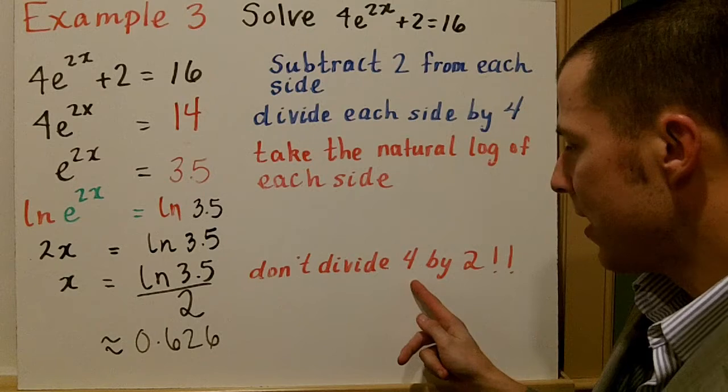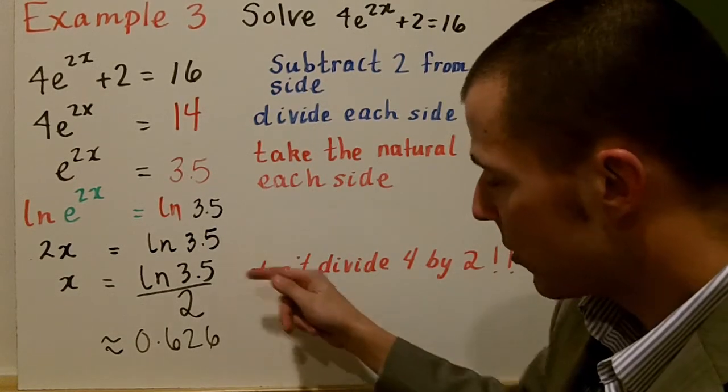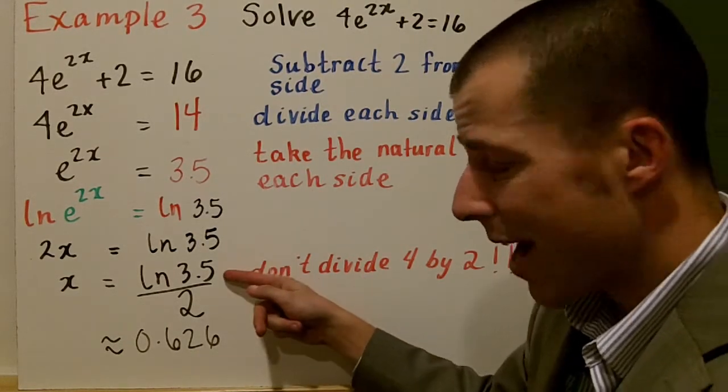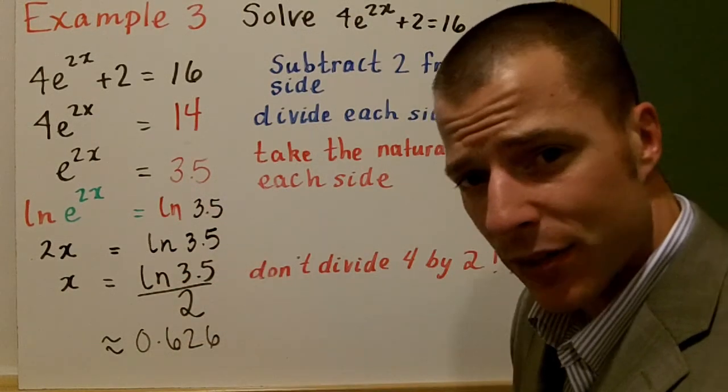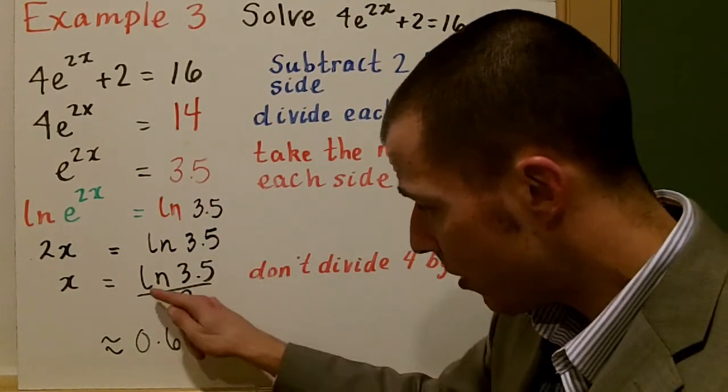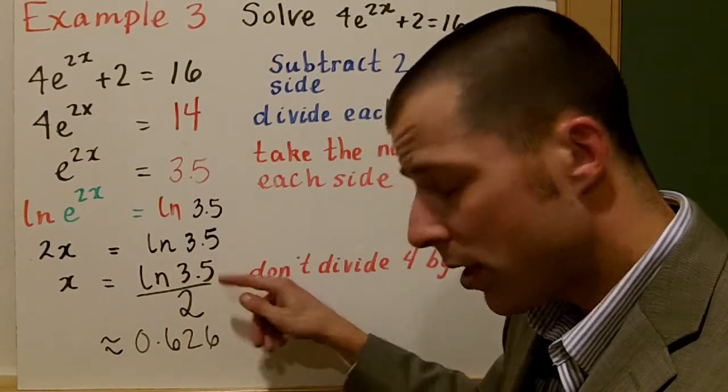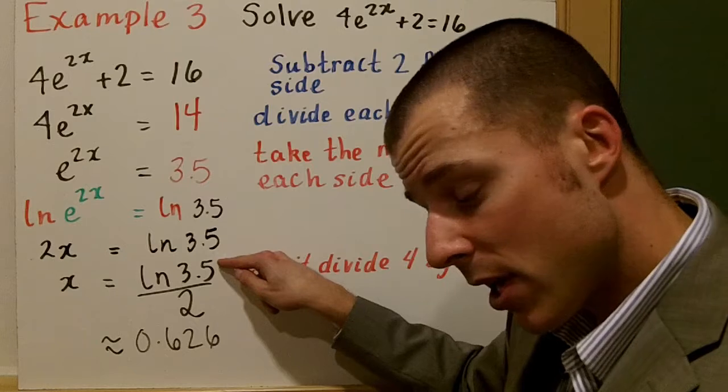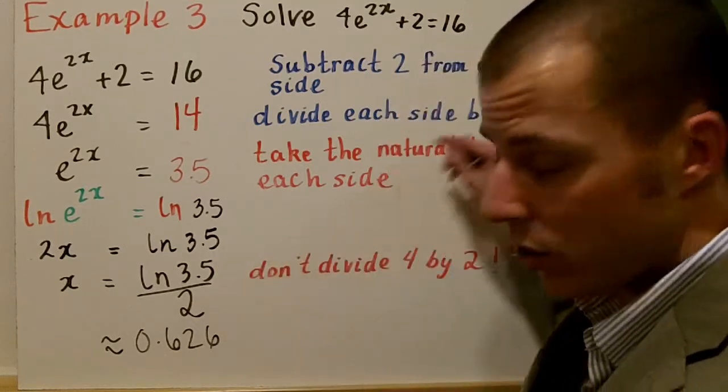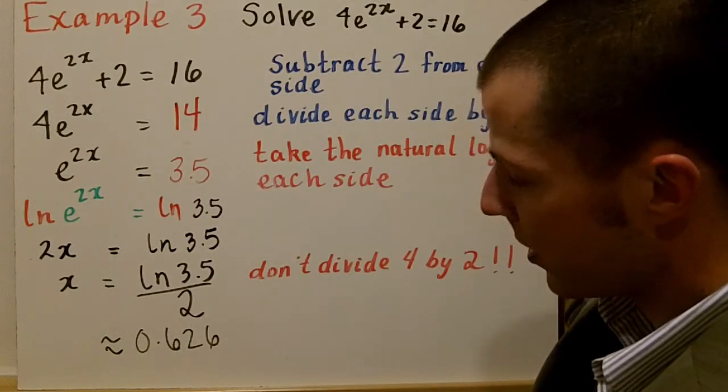Remember, don't divide 3.5 by 2, because this 2 is not with the natural log. It's not a single natural logarithm like the first example. The natural log is only here. So do ln of 3.5 on the calculator, get an answer, divide it by 2, and you're left with about 0.626.